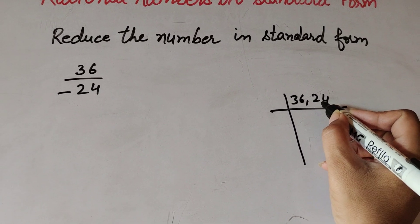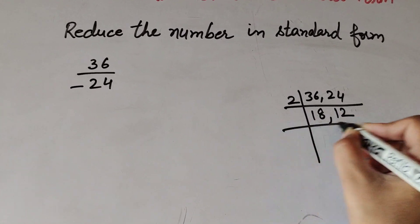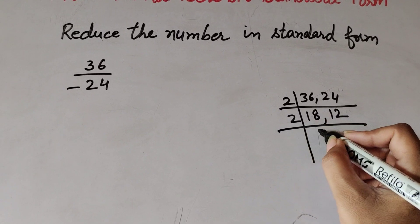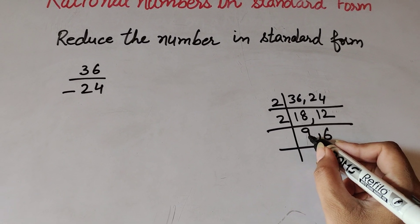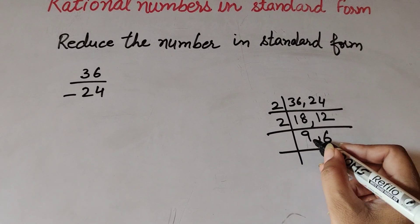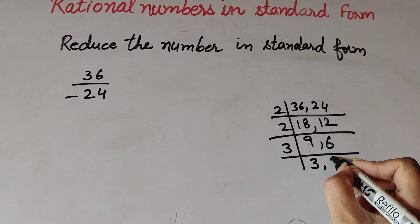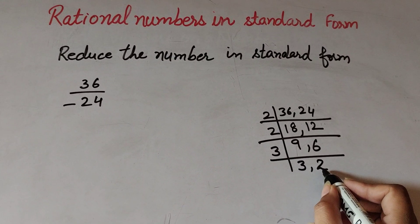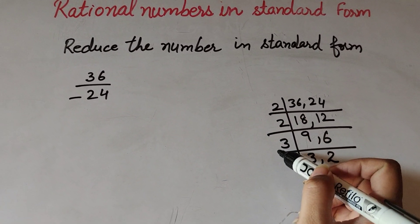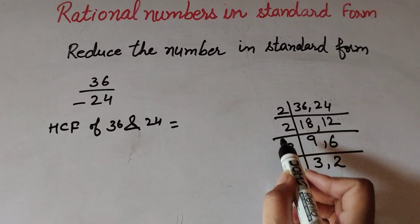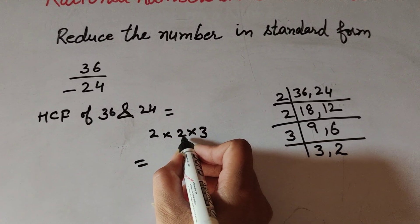Both 36 and 24 are divisible by 2. 36 divided by 2 gives 18, and 24 divided by 2 gives 12. Again, 18 and 12 are divisible by 2. 18 divided by 2 gives 9, and 12 divided by 2 gives 6. Now 6 is divisible by 2 but 9 is not, so we use 3. 9 divided by 3 gives 3, and 6 divided by 3 gives 2. Now 3 and 2 have no common factor, so we multiply 2 × 2 × 3 to get the HCF of 36 and 24, which equals 12.